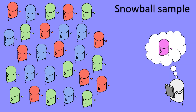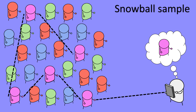Snowball sampling is used when the researcher is looking for an individual with a specific interest or characteristic that can be hard to find. Once the researcher finds one person with that trait, that person refers them to someone else, who then refers the researcher to another person, and so on. The researcher gathers a sample through contacts and referrals. Whether these samples are representative is difficult to determine, as participants may share similar characteristics or values.